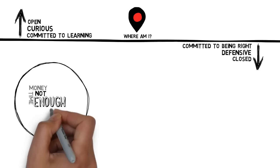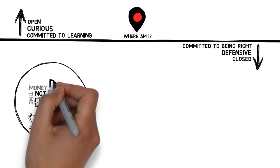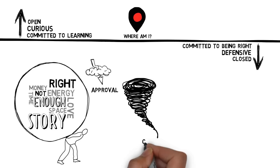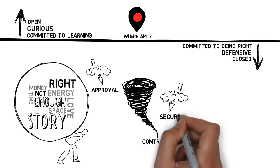People below the line also believe that their story about the situation is right. People below the line also believe that there is a threat out there—something or someone is threatening their desire for approval, control, or security. And people below the line see the situation as serious.